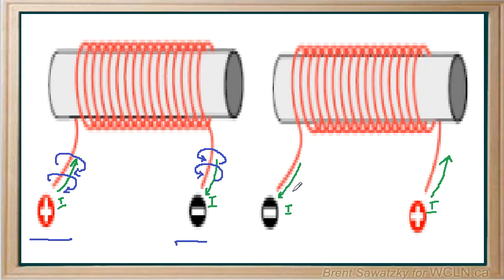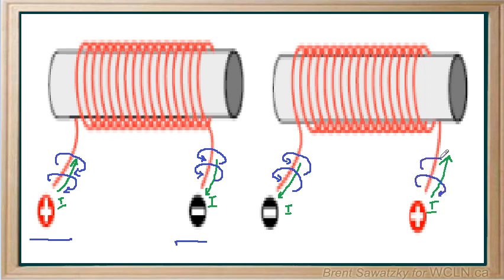The third wire is also coming out of the screen, so we can draw in the magnetic field here. Just apply the right-hand rule each time. For the last one, the thumb goes into the screen, and we would have a magnetic field like that.